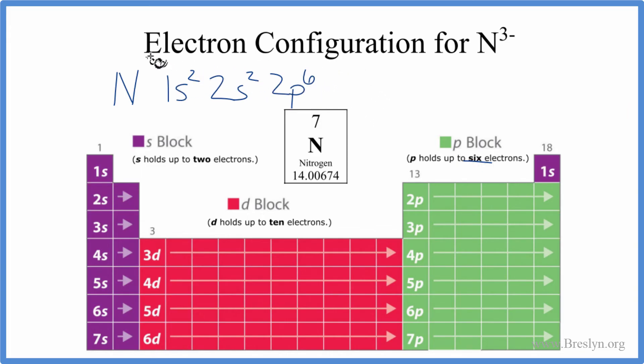And because we've gained three electrons, we put our three minus up here. And this is the electron configuration for the nitride ion, N3-.